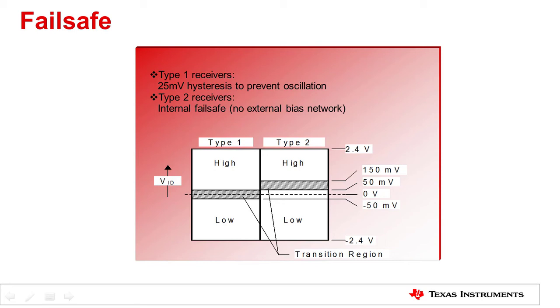Type 1 receivers are expected to be used for maximum speed signals, such as data or clock lines. Type 2 receivers are useful for low speed applications, such as control lines.